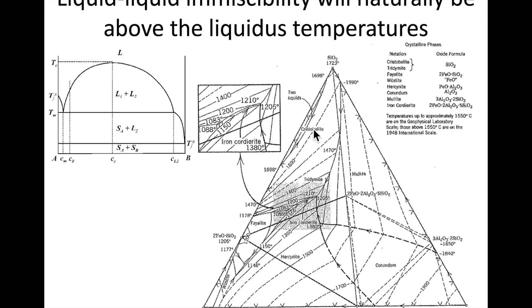In the ternary diagram, a region labeled 'two liquids' indicates liquid-liquid immiscibility. It has an arc shape — starting here and arcing around to another point — and it appears above the liquidus temperature, which is a key indicator of liquid-liquid immiscibility.